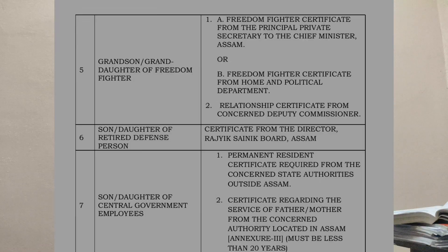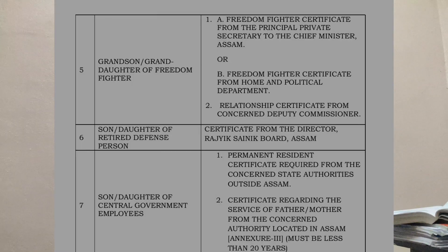It is also a document taken from the Permanent Residence Certificate. The Permanent Residence Certificate is required from the concerned state authorities outside of Assam. This is the PRC. Next, we will certify regarding the services of the father or mother from the concerned authorities located in the country. This is the central government service — this is the place where the office is located. In the case of the permanent resident certificate, it is required from the concerned state authorities outside of the country.